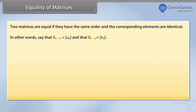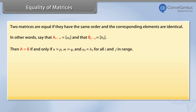In other words, say that A (N by M) equals A_IJ and that B (P by Q) equals B_IJ. Then A is equal to B if and only if N is equal to P, M is equal to Q, and A_IJ is equal to B_IJ for all I and J in range.